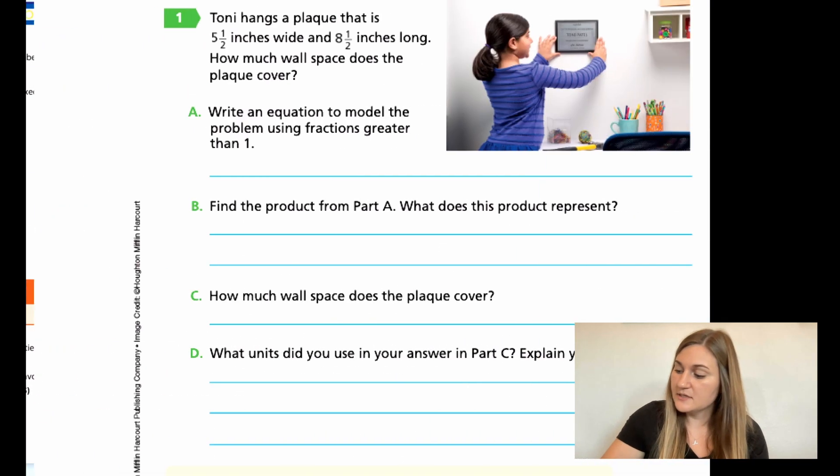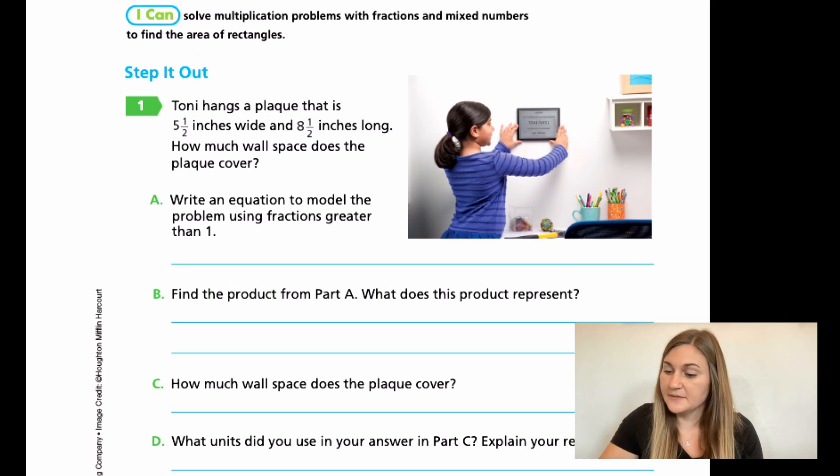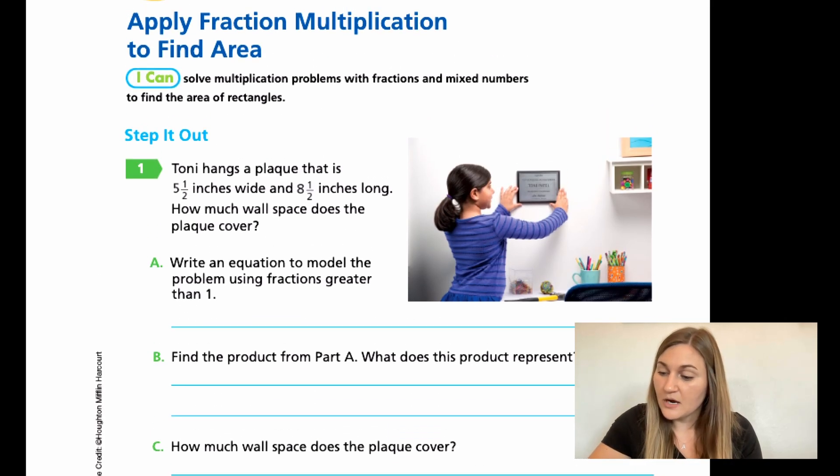Let's go ahead and jump into the lesson on page 229. It has step it up, problem number 1 reads, Tony hangs a plaque that is 5 1/2 inches wide and 8 1/2 inches long. How much wall space does the plaque cover? So for A, it says write an equation to model the problem using fractions greater than 1. So that means just take the mixed numbers and turn them into improper fractions.